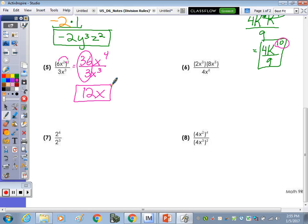Same idea in 6. So go ahead and multiply the numerator, and then we'll divide by 4x to the 6th. And what is 2x cubed times 8x to the 5th? 16x to the 8th. Now when I divide, 16 divided by 4 is 4, x to the 8th divided by x to the 6th is x squared.